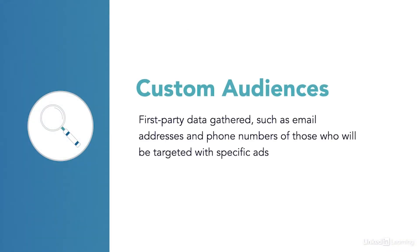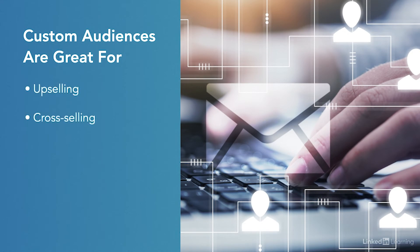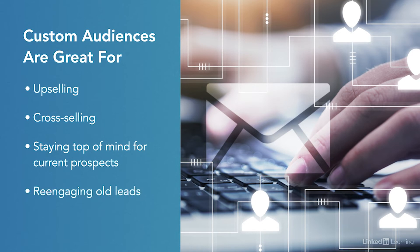The second form of remarketing list is called custom audiences. Custom audiences are created by uploading your first-party data, such as email addresses and phone numbers, to target an audience with specific ads. This type relies on Google's ability to match the email addresses, phone numbers, or mobile IDs you provide to their user base. Even if the emails you provide are not Gmail addresses, Google is often still able to match those emails to consumers. This is especially great for upselling and cross-selling to existing users, staying top of mind with existing prospects, and re-engaging leads that didn't close or customers who haven't visited your site in a while — without relying on them to have recently engaged with your web properties.